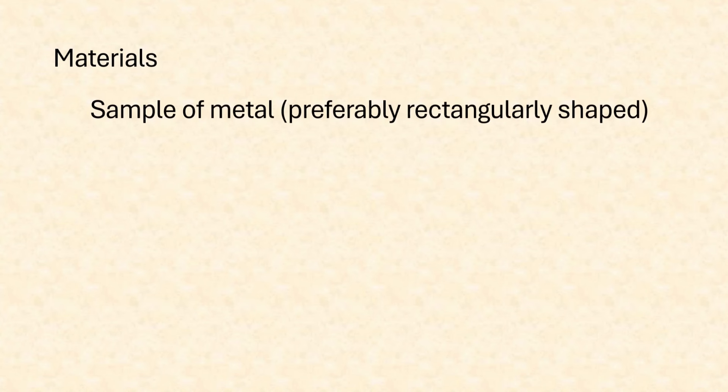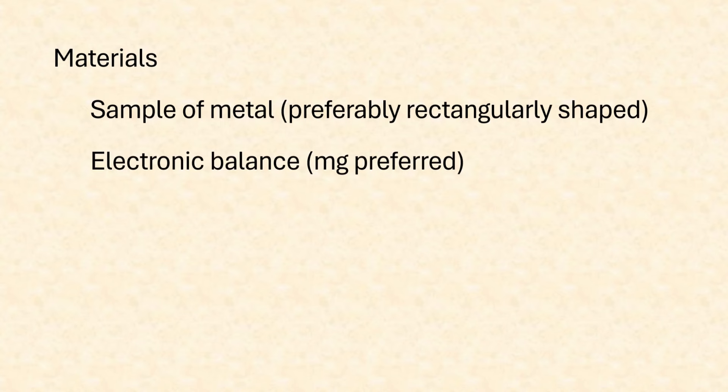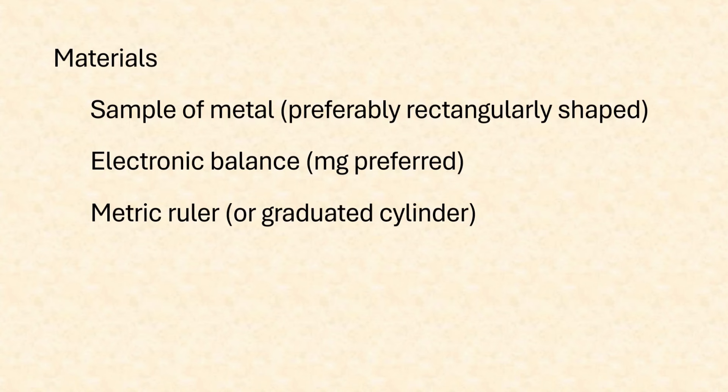In this experiment, students get to determine the atomic radius of a metallic element experimentally, and all you need is a sample of a metallic element, preferably in a rectangular form. You'll also need an electronic milligram balance and something to determine the volume of the metal. If it's rectangularly shaped, you can use a ruler. If it's irregularly shaped, you'll need a graduated cylinder. This experiment has six steps and it goes very quickly.